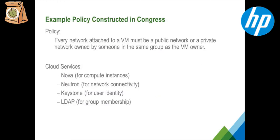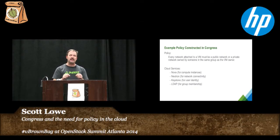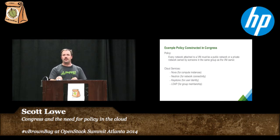Let's look at an example policy you could construct with Congress: every network attached to a VM must either be a public network or a private network owned by someone in the same group as the owner of the VM. This kind of policy cannot be expressed today in OpenStack. It relies on multiple cloud services — we have to pull information from Nova for VM ownership, from Neutron for network attachments, from Keystone for user identity, and even from an LDAP directory to confirm that the person attaching the network is in the same group as the VM owner. This is a complex policy touching multiple cloud services, made possible through Congress.